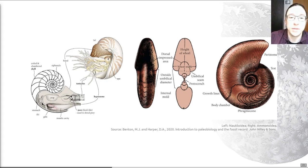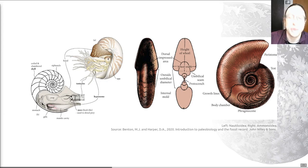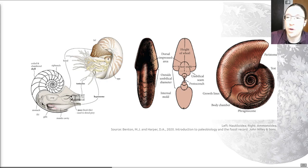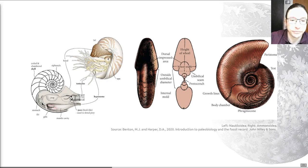The phragmacone is the remaining part of the shell excluding the body chamber near the opening of the animal. These animals also have a siphuncle, but in ammonoids it is generally situated along the outer ventral margin of the shell — towards the outside, rather than the middle as in nautiloids. The phragmacone is chambered, as with nautiloids, and each chamber marks a successive occupation by the animal. But the septa are far more complex in structure, which means that the sutures are also far more complex.